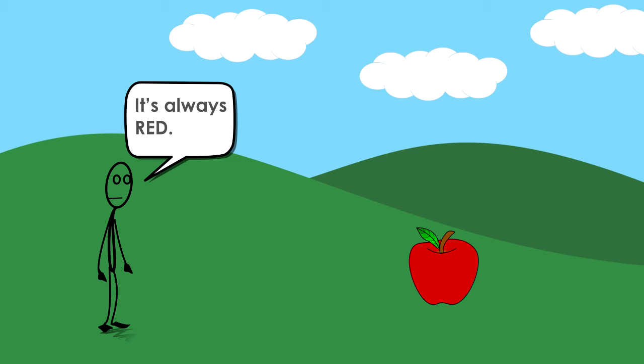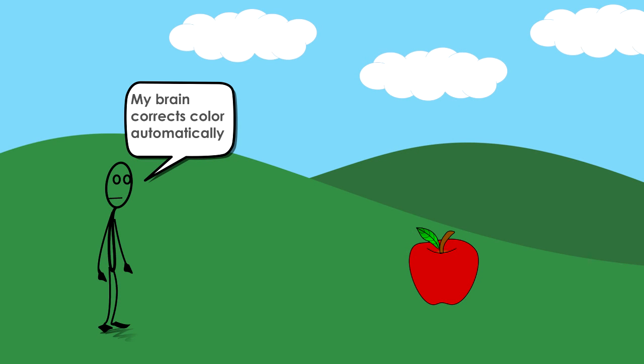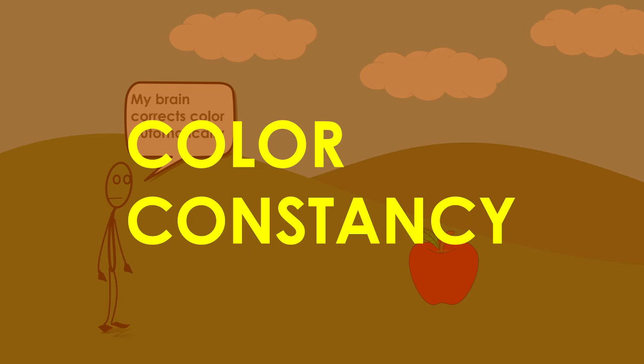An apple always appears red. The human eye perceives the apple as red whether it's viewed during the day or at night. That's because it automatically corrects the color depending on the amount of light in the scene. This property of the human eye is called color constancy.